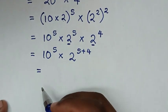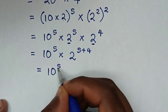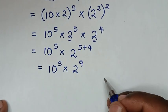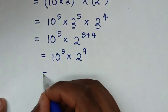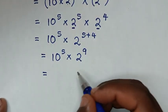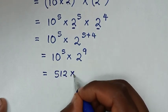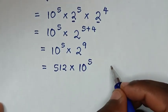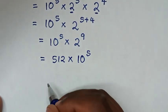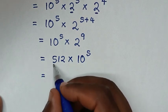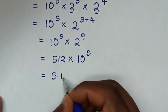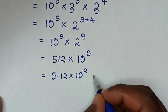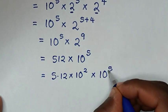Then it will be equal to 2 power 9, which is 512, times 10 power 5. Converting 512 into standard notation: 512 is the same as 5.12 times 100, which is 10 squared, then times 10 power 5.